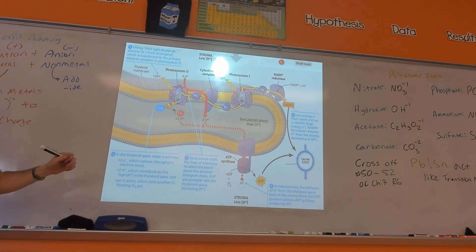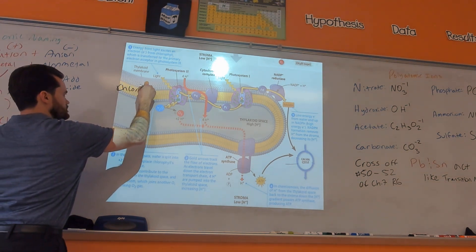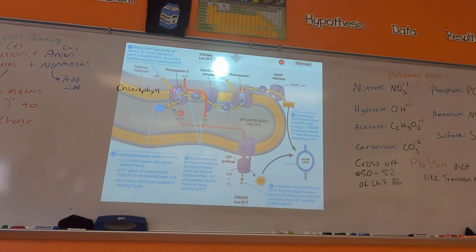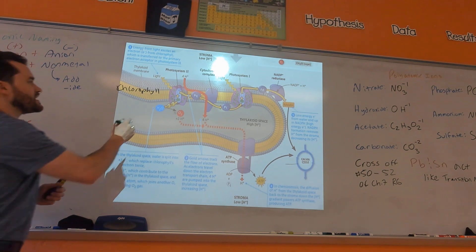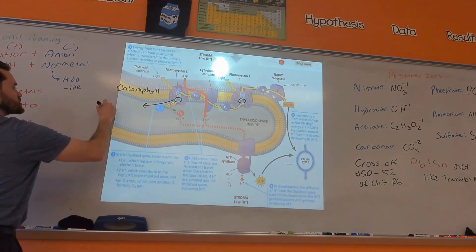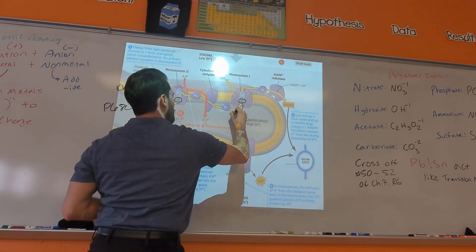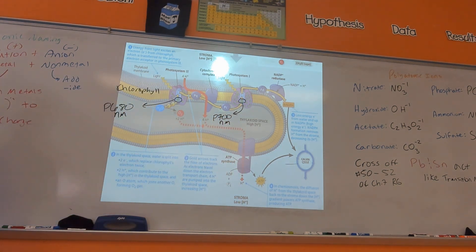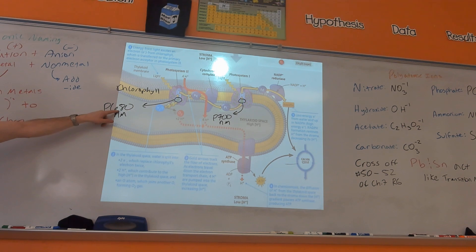Photosystem 2 and Photosystem 1 are the same basic idea. In both, sunlight hits pigment molecules called chlorophyll. Chlorophyll absorbs that sunlight and passes the energy from chlorophyll molecule to chlorophyll molecule until it reaches a special chlorophyll called P680 in Photosystem 2, and P700 in Photosystem 1. Those numbers refer to the wavelengths of light — in nanometers — that those pigment molecules specialize in absorbing. P680 goes with Photosystem 2, and P700 goes with Photosystem 1.